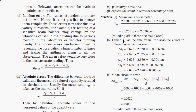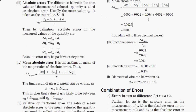Next, we find the absolute error. For each reading: Δa1 = a_m − a1, Δa2 = a_m − a2, Δa3 = a_m − a3, Δa4 = a_m − a4, and so on. We get a mix of positive and negative values. To find the mean absolute error, we take the modulus of all these values and find their mean — dividing by 5 — and we get 0.003 cm.